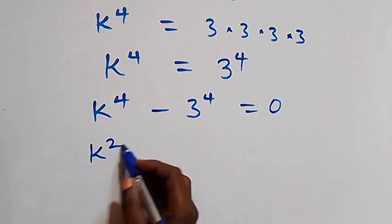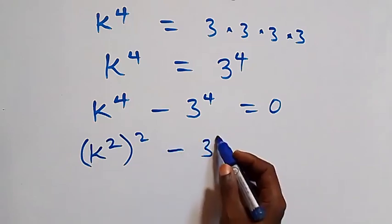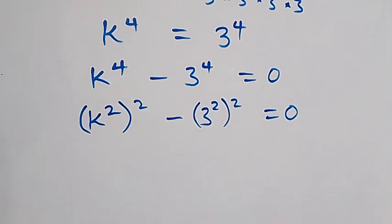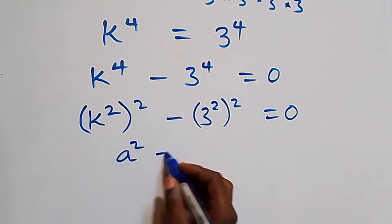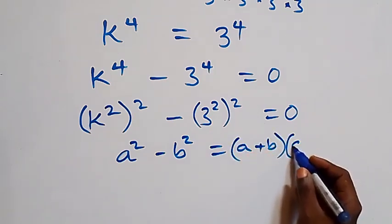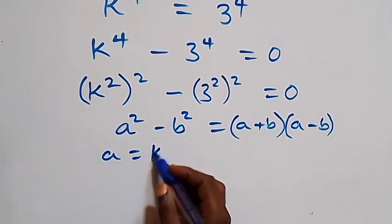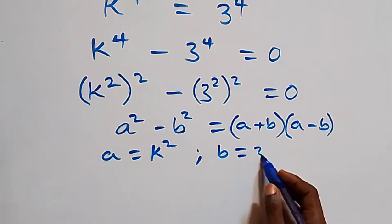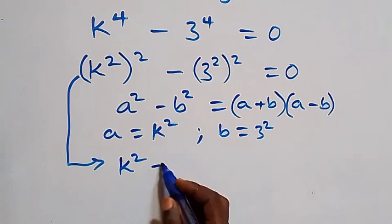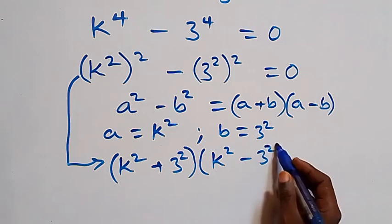From here, we can rewrite this as k squared, then squared — that is (k²)² — minus 3 squared also squared, which equals 0. This follows from the identity a squared minus b squared equals a plus b times a minus b. Here a is k squared and b is 3 squared.